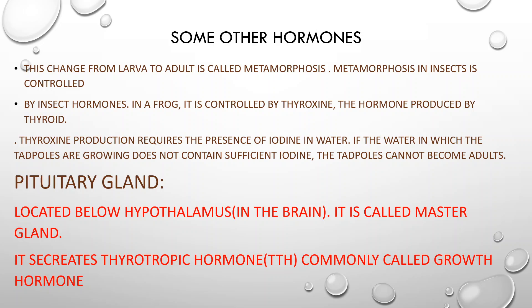Whenever a larva changes into an adult, this process is known as metamorphosis. Metamorphosis is when a larva becomes an adult, or a tadpole becomes a frog. Which hormone controls this metamorphosis process?